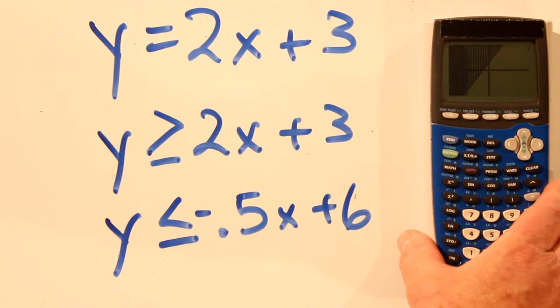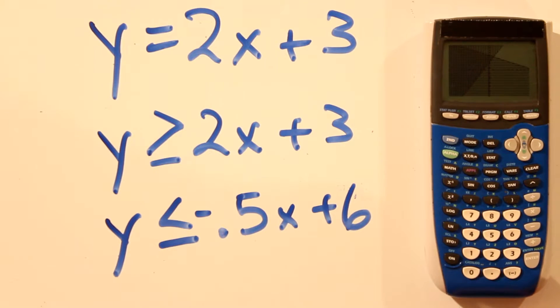There's the greater than 2x plus 3. And there's the less than negative 0.5x plus 6. And a shaded area that intersects.